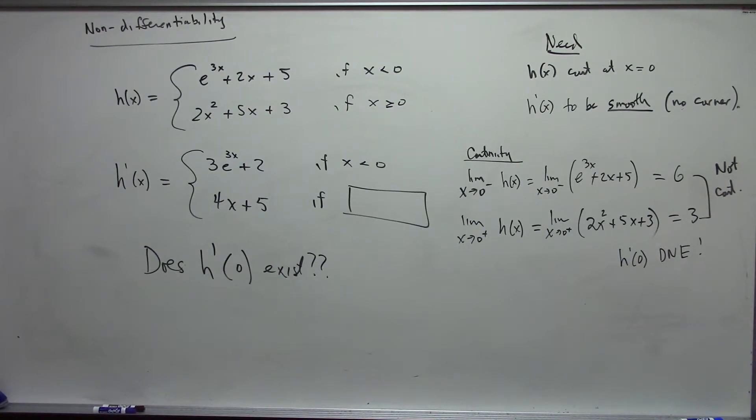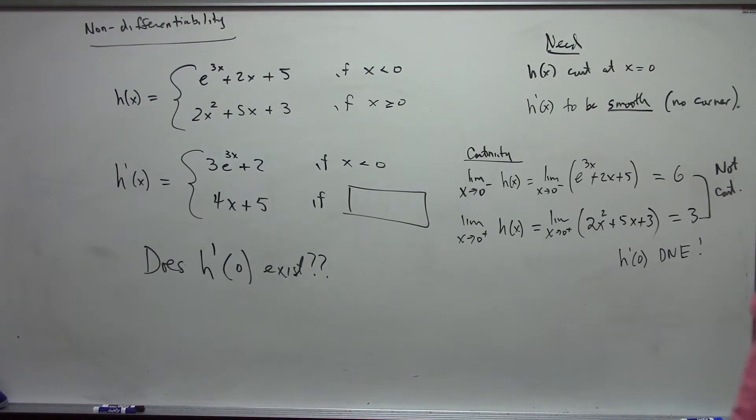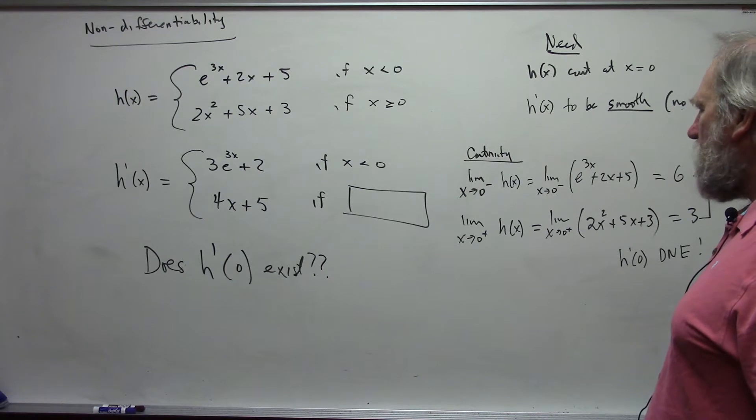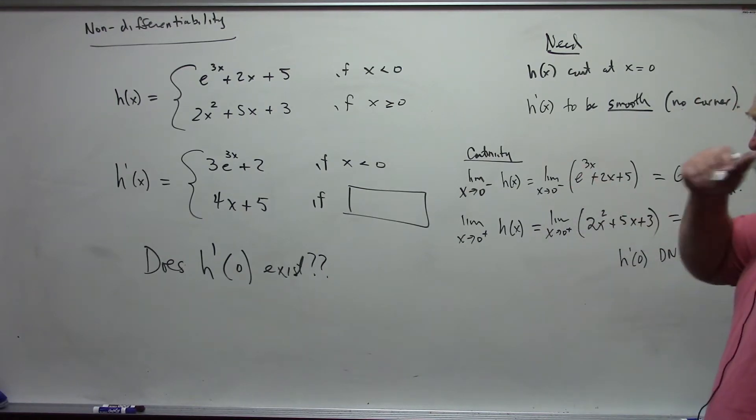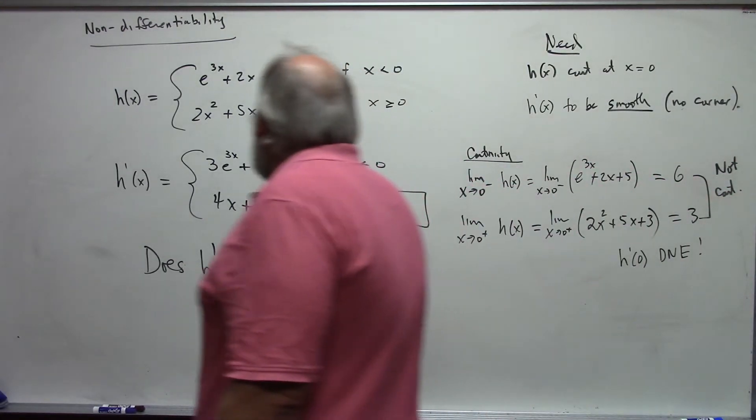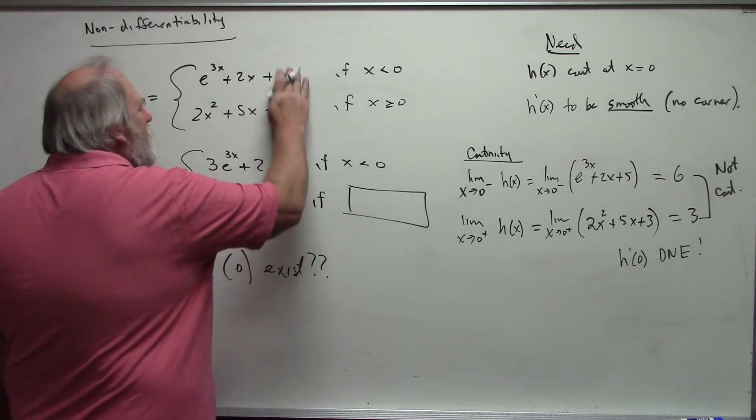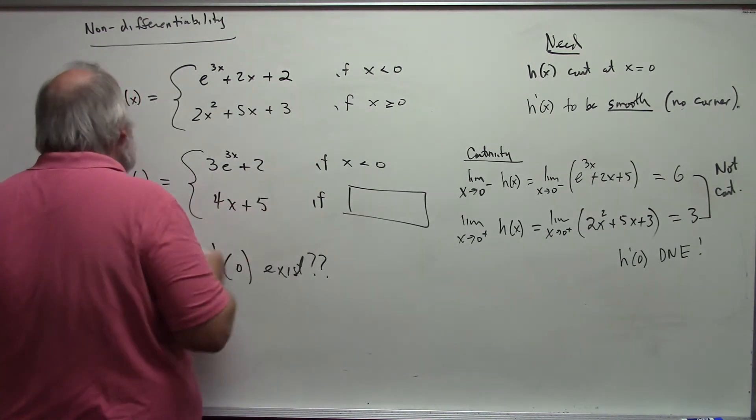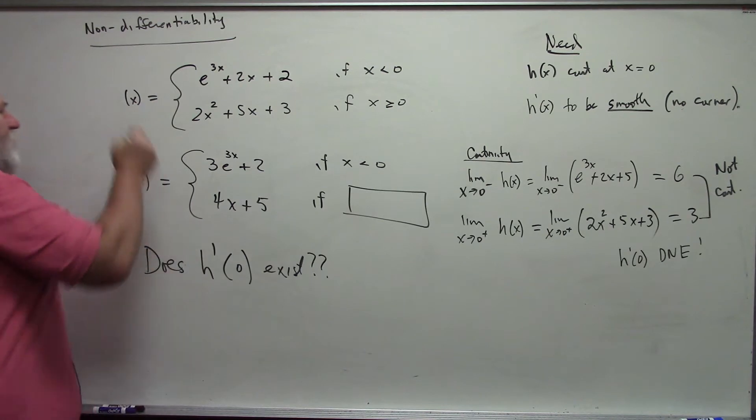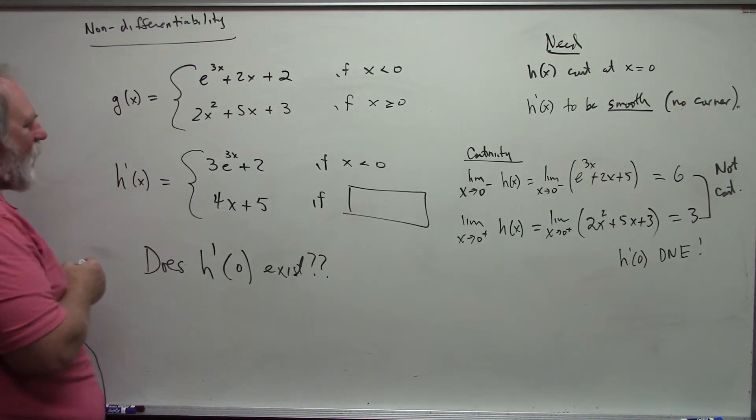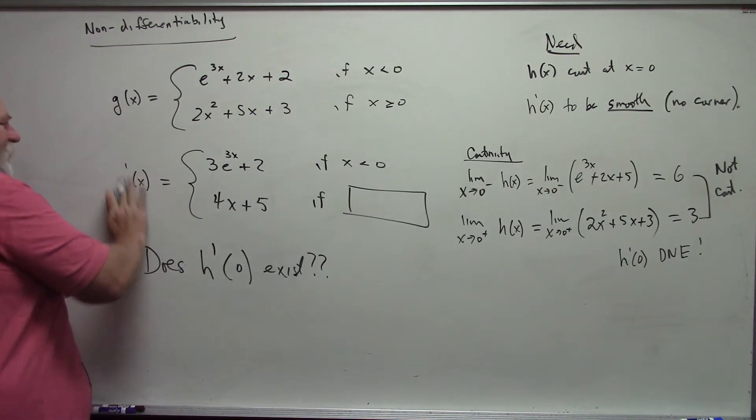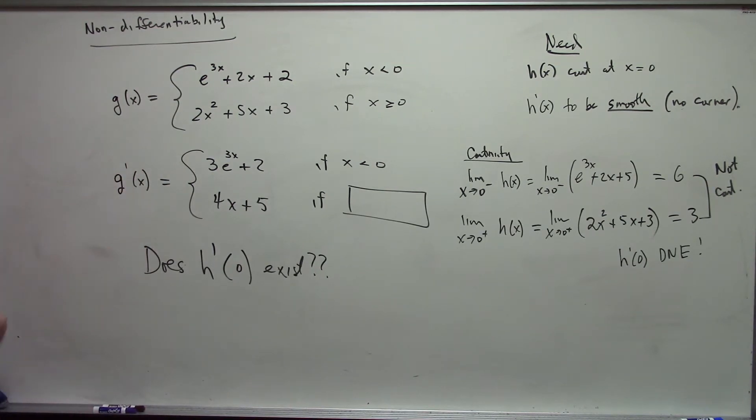Now, I'm going to alter this problem slightly to make the function continuous. And I'm going to do that by saying, instead of making my function e to the 3x plus 2x plus 5, I'm going to make it e to the 3x plus 2x plus 2. So let's call this g of x. It's a new function. Fortunately, that does nothing to the derivative. The derivative of a constant is 0, so changing that constant does not change anything.